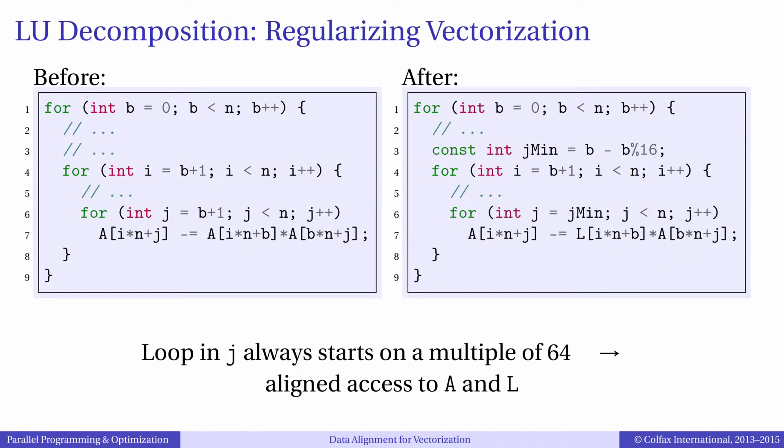To regularize this loop, we will pad the loop bounds. In this panel we have the relevant lines of code before regularization. In this panel we have the regularized loop. As you can see, we introduced a new variable, jMin, which is the greatest integer no greater than B and also a multiple of 16. So we will begin the loop in J a little earlier than we have to according to the algorithm. However, it will begin on an aligned boundary, so we will not have a peel loop.